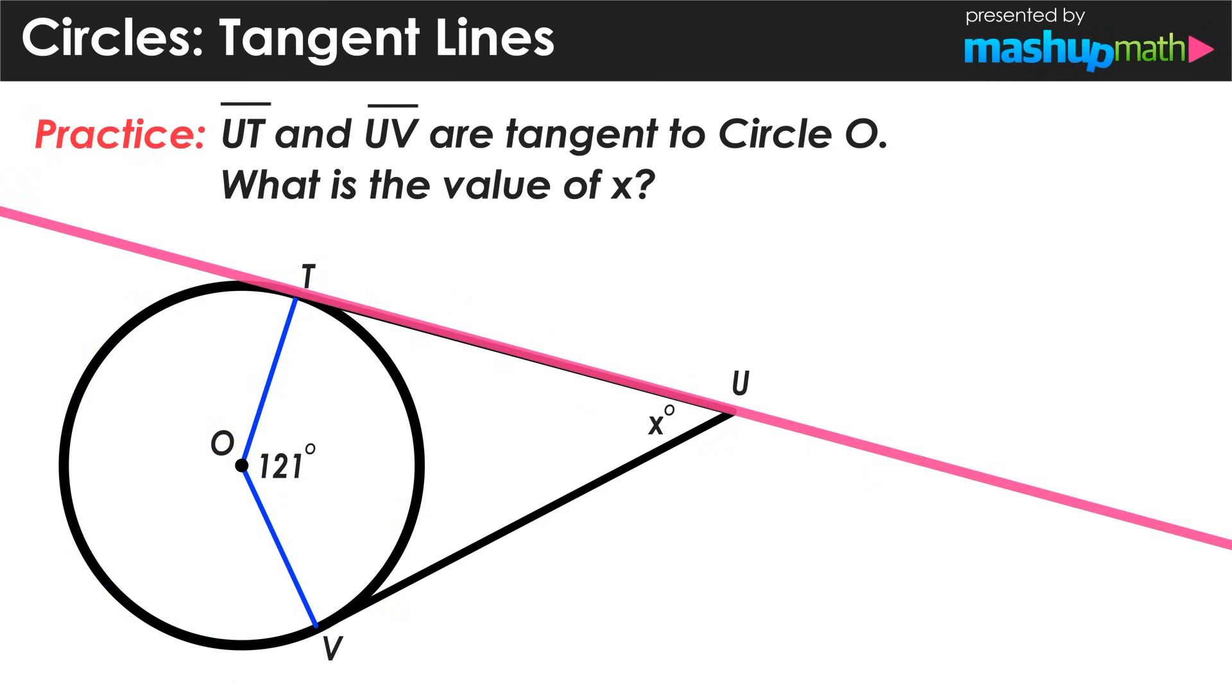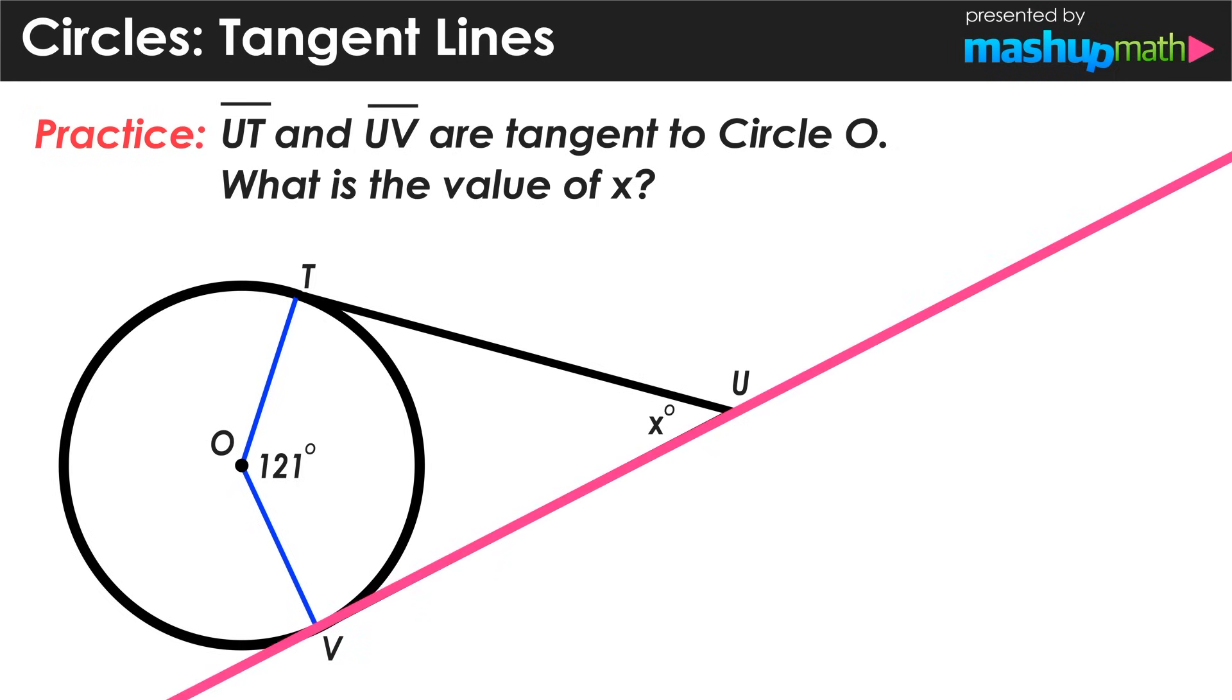Notice that lines UT and UV are line segments. However, they are still tangent to circle O, which means that they will still hold the same properties of tangent lines, even though they are not infinite lines. And we should also note that we know that angle O has a value of 121 degrees, and that angle U is the value x that we are looking to find.